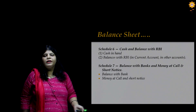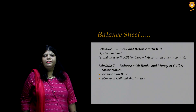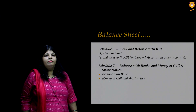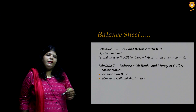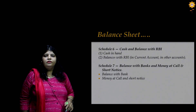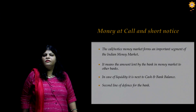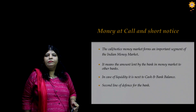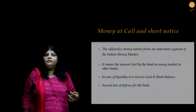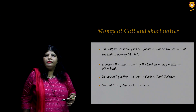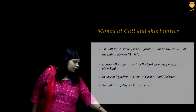Coming back to the asset portion of the balance sheet — Schedule 6 is cash and balance with RBI, where cash in hand is the first item and balance with RBI is the second. Schedule 7 covers balance with banks and money at call and short notice, divided into two parts. Money at call and short notice refers to the money lent by the bank to other banks in the call money market. In terms of liquidity, these advances come next to cash and serve as the second line of defense for the bank. Whenever a bank wants its money back, it has to give a notice of less than 15 days.